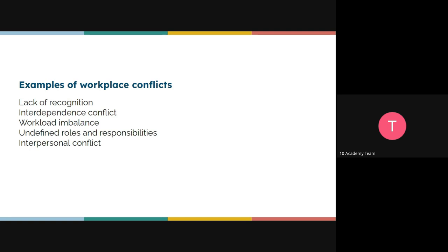Then we have workload imbalance, which is mostly seen when working in a team and some members feel overloaded while others are not pulling their weight and are never reprimanded. We also have undefined roles and responsibilities — just like Gabriel mentioned. When the manager or team lead doesn't clearly distribute each person's role, conflicts arise because no one knows who should do a particular thing or who gets credit.